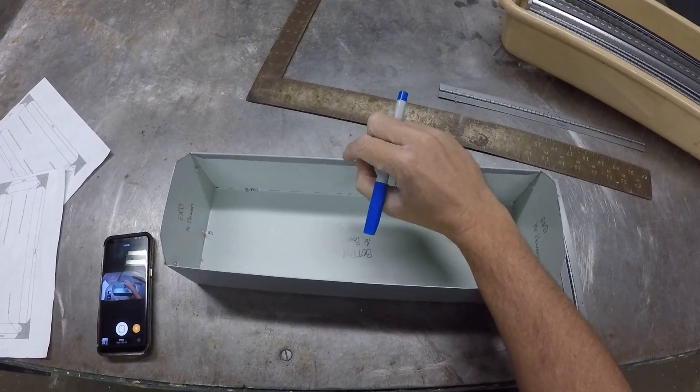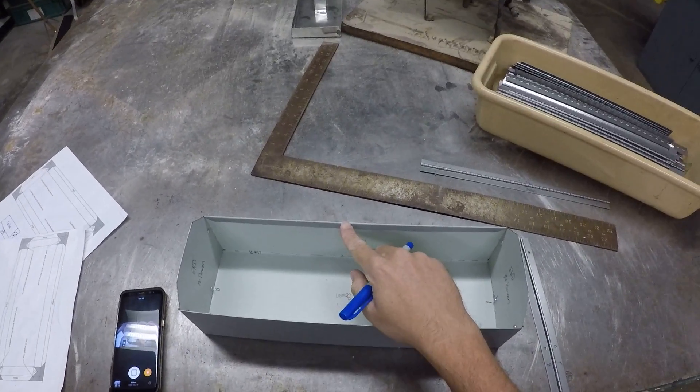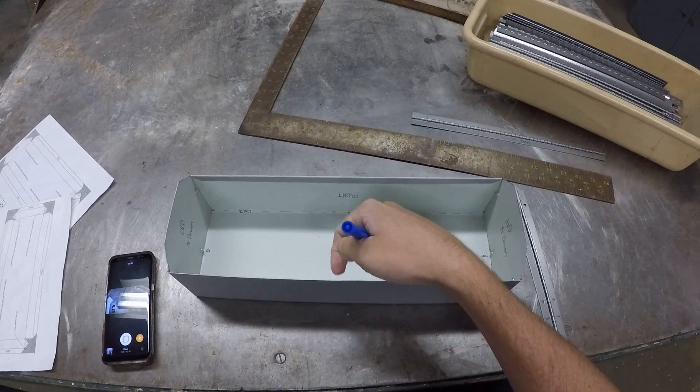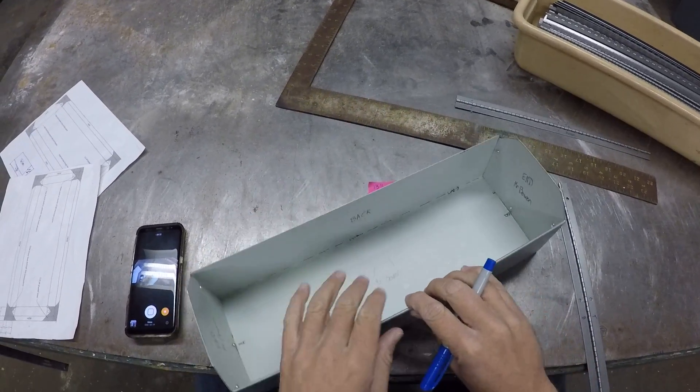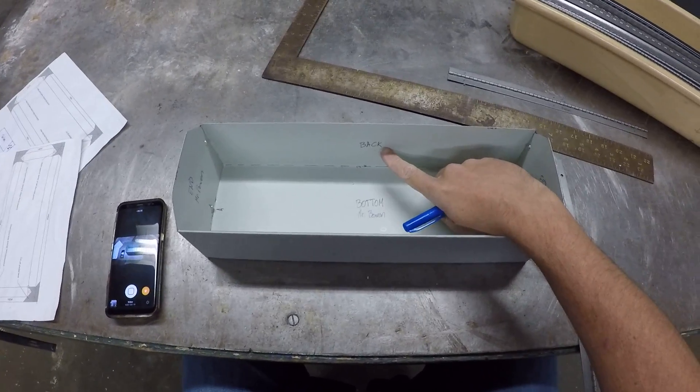We have the hem which is going to be in the front of our toolbox. So we're going to be attaching to the other side that says the back here.